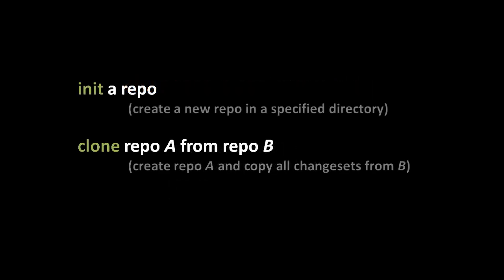The first two Mercurial commands we'll look at are init and clone. Init, short for initialization, is used to create a totally new repo, whereas clone is used to create a repo which is a copy of some other existing repo — one in which all the same change sets are present. When we clone a repo, the source is very often remote, somewhere out there on the network, though we'll first demonstrate cloning a local repo.